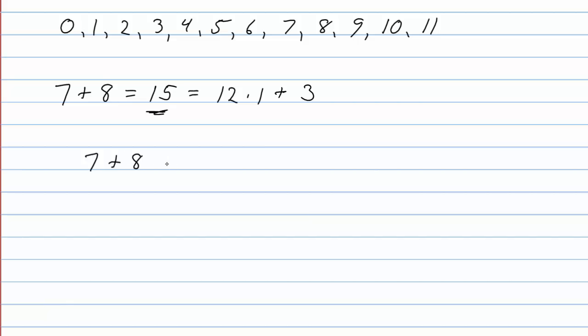7 plus 8 mod 12, that's what we define to be 3. The mod 12 here is supposed to make you think that we're not doing ordinary addition anymore. We're now doing this modulo 12 addition, or you can think of this as clock arithmetic.